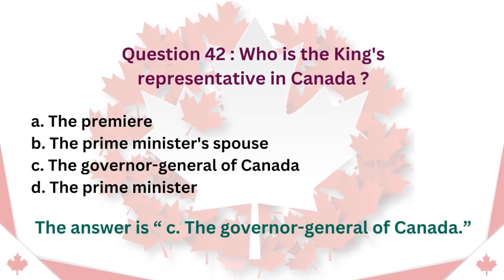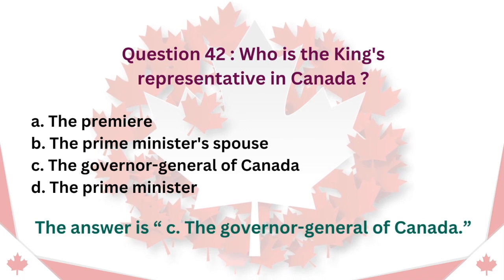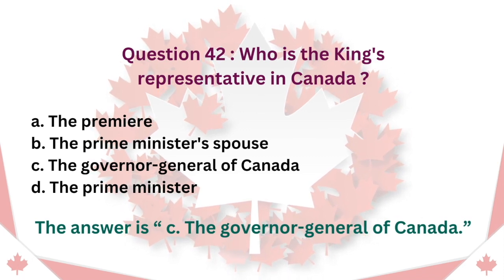Question 42: Who is the King's representative in Canada? A. The Premier. B. The Prime Minister's spouse. C. The Governor General of Canada. D. The Prime Minister. The answer is C. The Governor General of Canada.